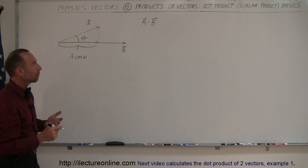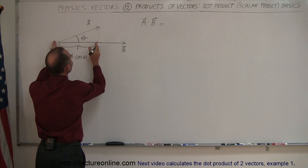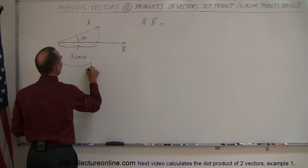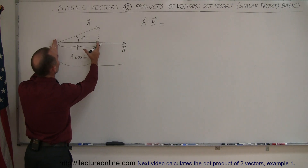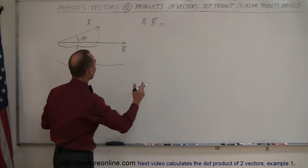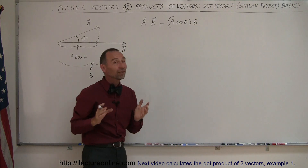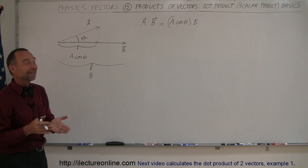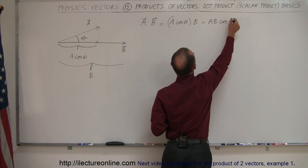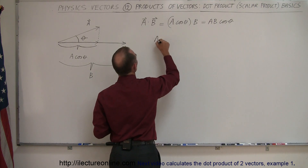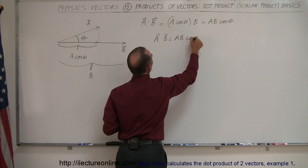It turns out that A dot B is equal to the length of the projection of vector A onto vector B, times the length of vector B. So the dot product equals A times cosine of theta times B. We usually write it as A dot B equals A times B times the cosine of the angle between them.